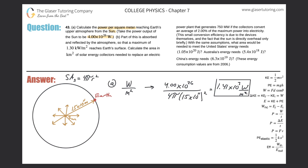We can convert it to kilowatts if we want. Let's see what letter B asks. Part B says part of this is absorbed and reflected by the atmosphere so that a maximum of 1.3 kilowatts per meter squared reaches the Earth's surface. Calculate the area in squared kilometers of solar energy collectors needed to replace an electric power plant that generates 750 megawatts, if the collectors convert an average of 2% of the maximum power into electricity.